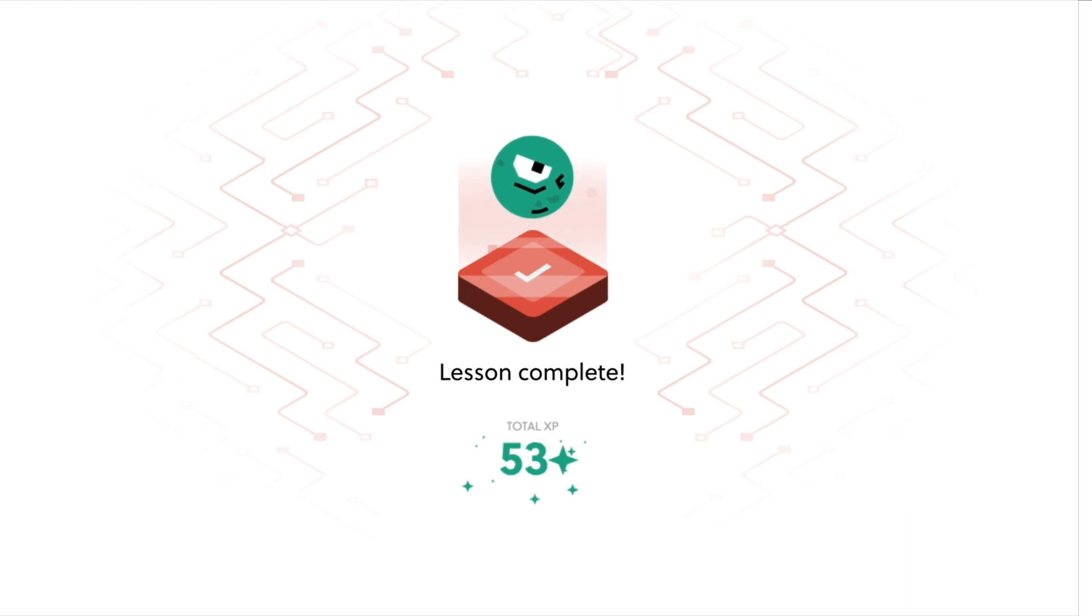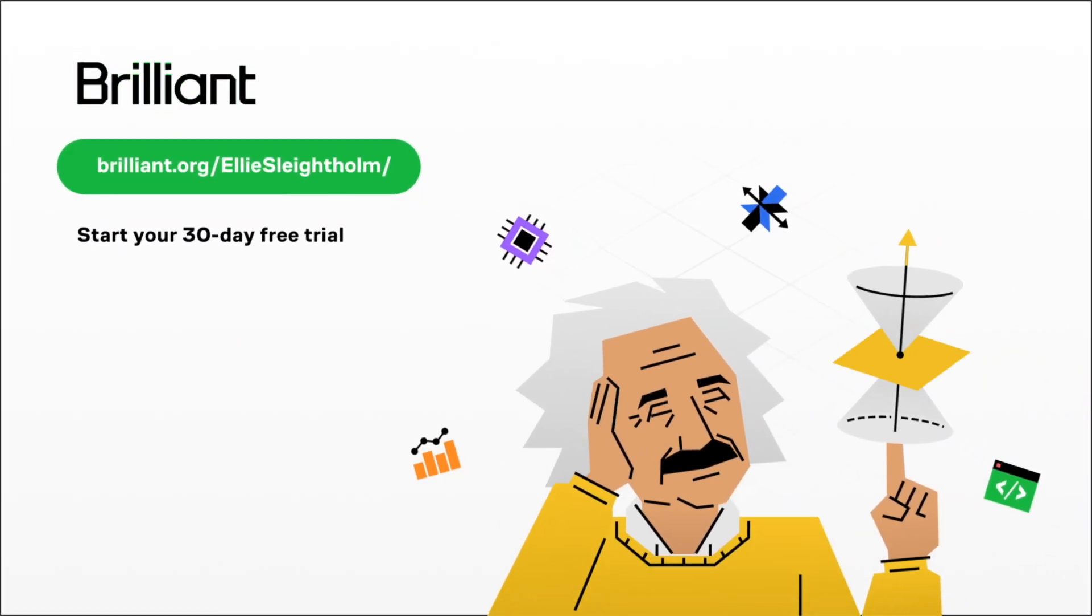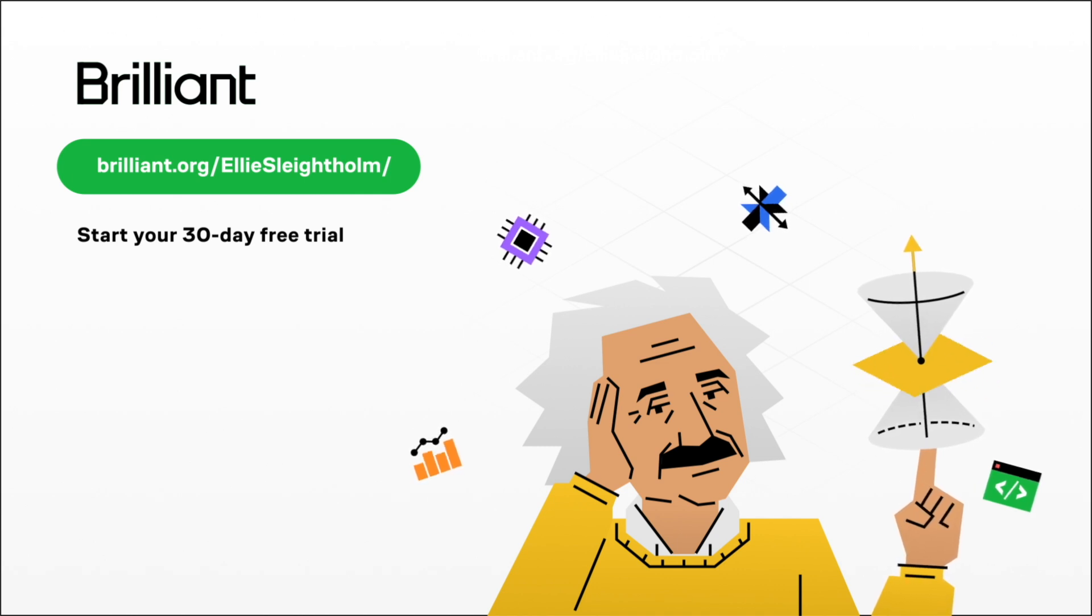What I love about the lessons on brilliant is that they are designed so that you can actually get your hands on problem solving, so you can do real world problem solving and it allows you to play with concepts. Now this is a method that is six times more effective than simply watching a lecture. Brilliant helps you build knowledge little by little each day. If you want to try out everything that brilliant has to offer for free for a full 30 days, then head to brilliant.org forward slash ellie slight home, and you'll also get 20% off brilliant's annual premium subscription. Thank you to brilliant for allowing me to make really cool videos like these. Now let's get back to the exam.